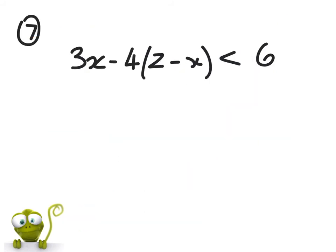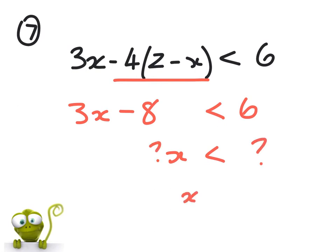Question seven: solve the inequality. We need to remove the brackets first. So that's 3x, negative four times two is negative eight, negative four times x is negative 4x—something less than six. Get all the x's on this side, get all the numbers on that side. You can then work out what x is to be less than, just like doing an equation except the only difference is that we put the less than symbol in instead of an equal sign.